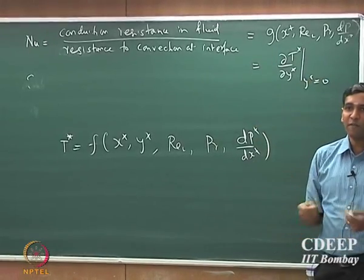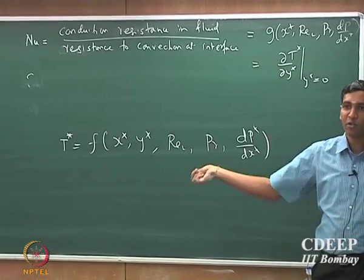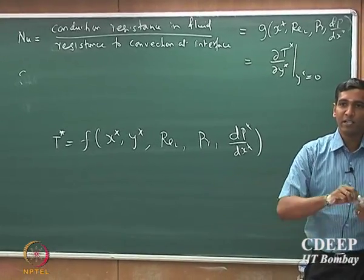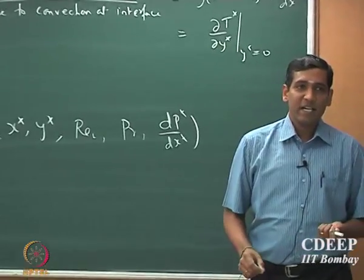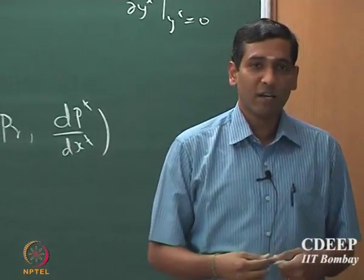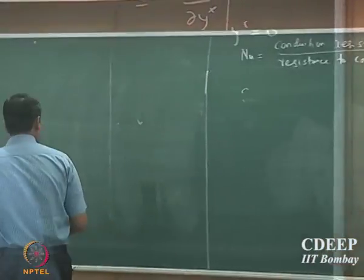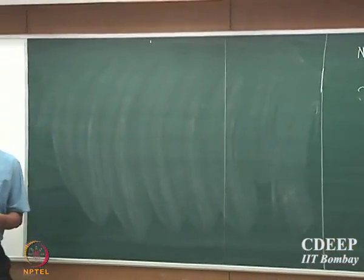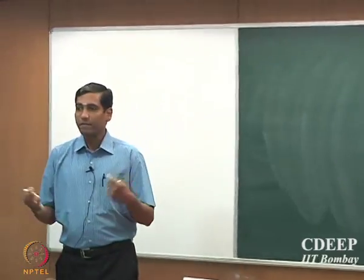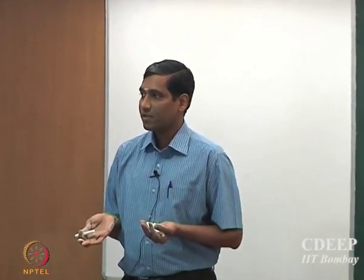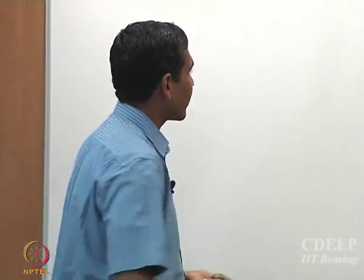The Nusselt number is not a function of y position anymore. It is only a function of x position because you are interested in the gradient at the interface, which is y-star equal to 0. So, what we are going to see today is — so far you have not solved any equation. The question is: can we get any further insights without solving the equation? We have to solve them eventually, but we are going to first try to extract as much information as possible before solving the governing equations.